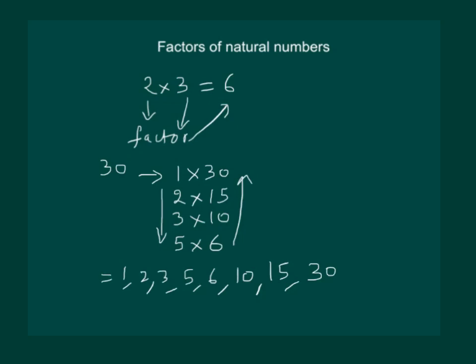Also we can notice that here 2, 3 and 5 are prime numbers factors and hence 2, 3 and 5 are the prime factors of 30.